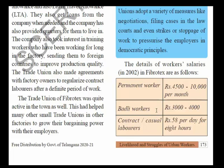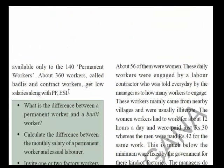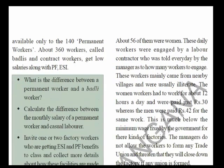Budli workers come in when a permanent worker is absent; otherwise they are not called. Contract or casual laborers work on a one-day or two-day hourly basis and get only 58 rupees per day. In Fibrotex company, only about 80 permanent workers are available, while about 360 workers — called Budli and contract workers — get low salaries along with PF and ESI benefits.